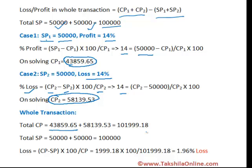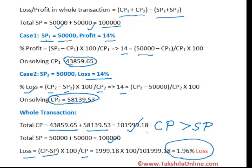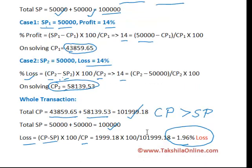The total cost price of the whole transaction is the sum of both cost prices, and the selling price of the whole transaction is 1 lakh. It is clear that cost price is greater than selling price, meaning there is a loss in the whole transaction. Calculating: loss equals cost price minus selling price divided by cost price, it comes to 1.96% loss. This involved three calculations with two decimal digits — a time-consuming process in a real exam.